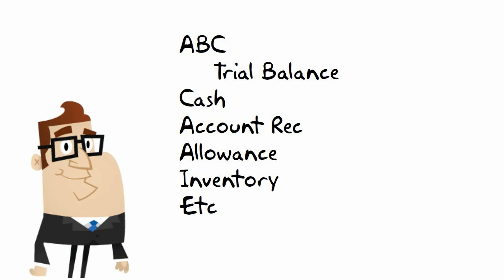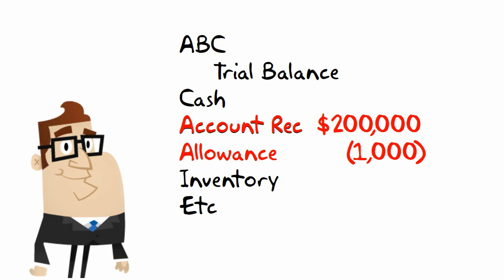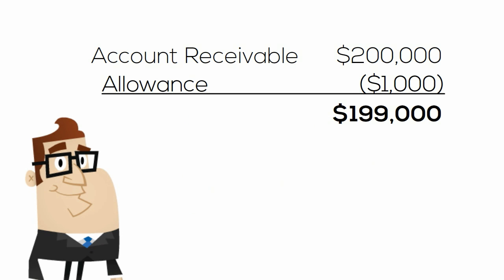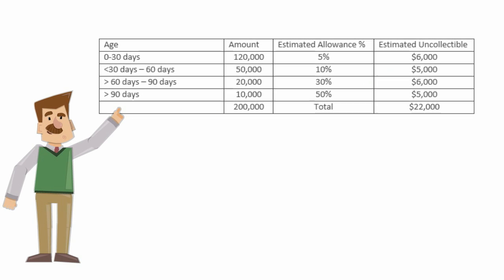For example, assume a company's pre-adjusted trial balance shows: Accounts Receivable with a $200,000 debit balance, and Allowance for Doubtful Accounts with a $1,000 credit balance. Based on these numbers, its pre-adjusted net receivables would be $199,000, i.e. $200,000 less $1,000 in allowance. However, management created an accounts receivable aging of the $200,000 in order to estimate that its Allowance for Doubtful Accounts should be $22,000.